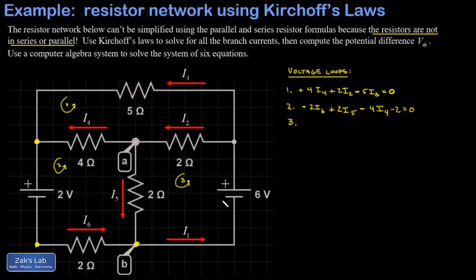In loop 3, the first thing that I hit, I go from the low side to the high side of this power source. That's 6 volts. The second thing I hit, same direction as I2 across the 2-ohm resistor. And the final piece here, same direction as I5 across the 2-ohm resistor. And I'm back where I started.